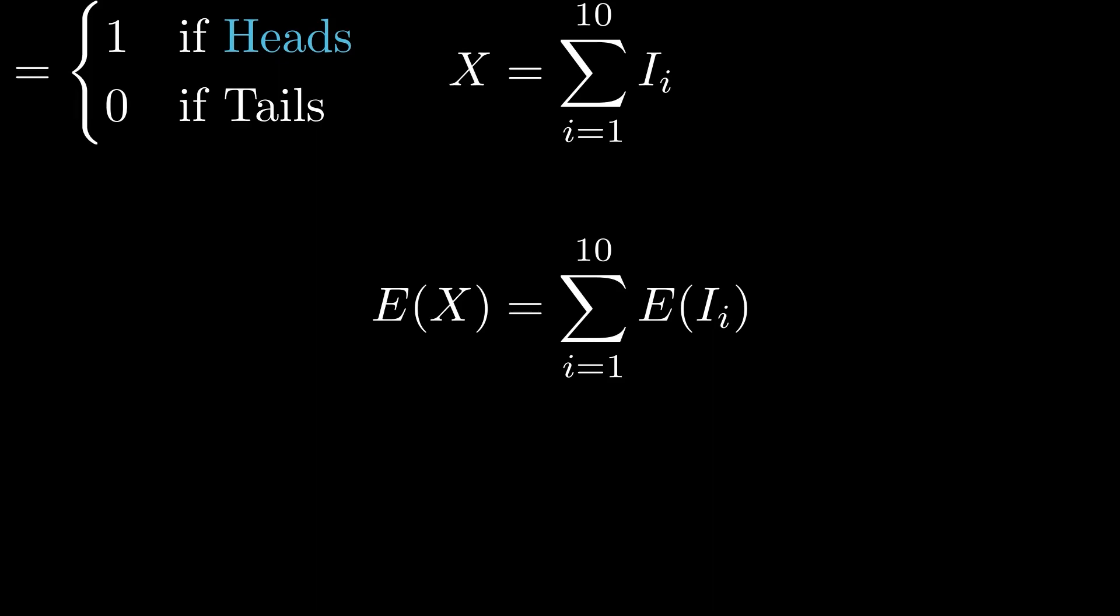Now we know that the expected value of an indicator random variable is the probability of the event it represents. So we can substitute the expected value of each indicator random variable with the probability of getting heads.